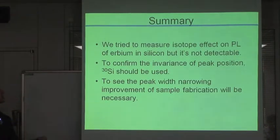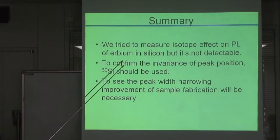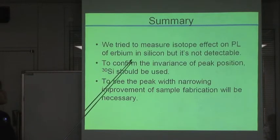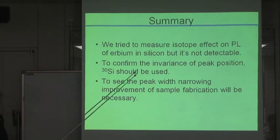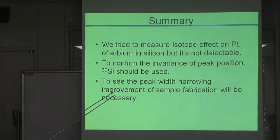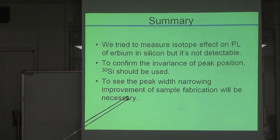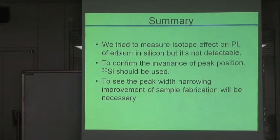Finally, let me summarize my presentation. We tried to measure the isotope effect on photoluminescence of Erbium in silicon, but it was not detectable. To confirm the invariance of peak position, 30-silicon should be used. And to see the peak width narrowing, improvement of sample fabrication will be necessary. Thank you for your attention.